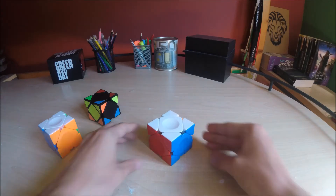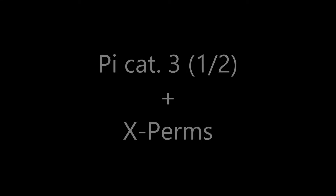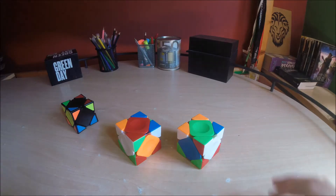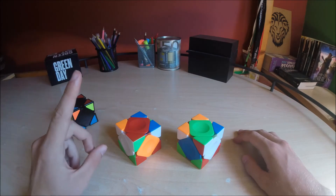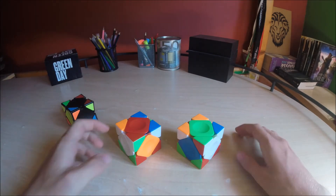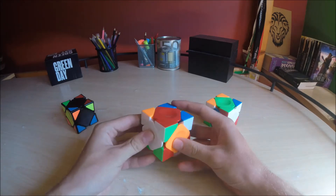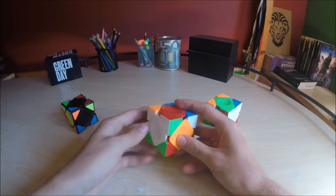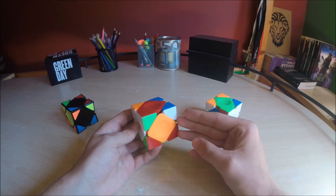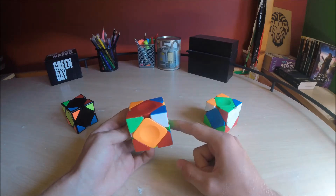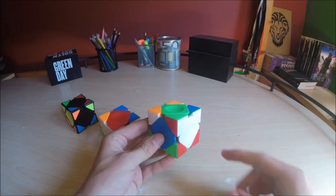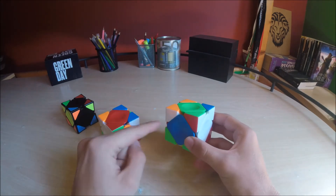Let's do the next cases. In the next cases we now have the variation of the X-perms. And the difference between these two is that this one the adjacent centers are on the left side and the X-perm is on the right — it goes counterclockwise. And the other one the adjacent centers are on the right side and the X-perm is on the left — it goes clockwise.